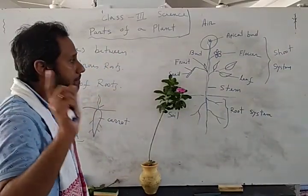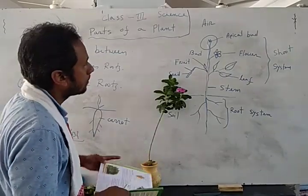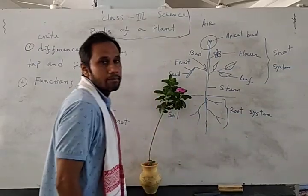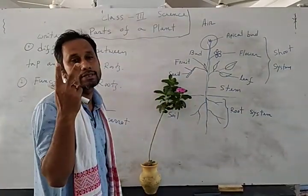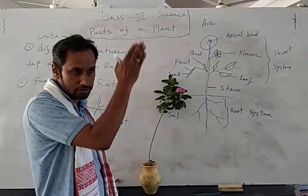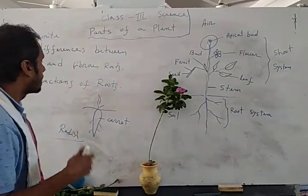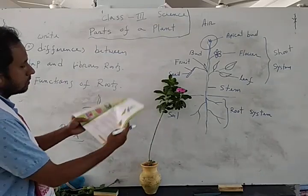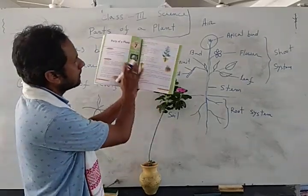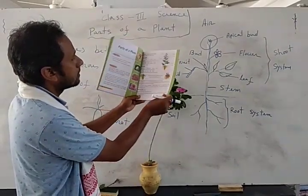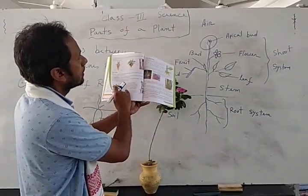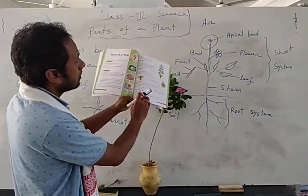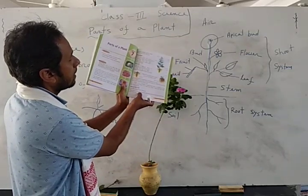Today we have learned two main things. Remember: a plant has two main parts — the shoot system and the root system. A plant has two kinds of root systems: one is fibrous and another is tap. Root fixes the plant firmly in the soil, and roots also absorb water — these are the functions of roots.